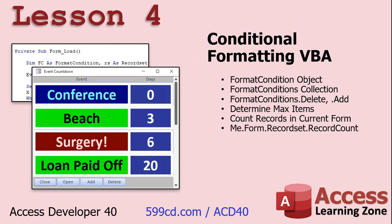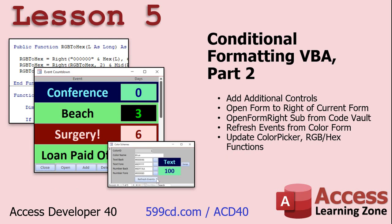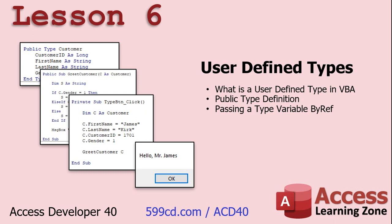Then in lesson four, we'll learn how to modify the conditional formatting on each form at runtime. When the form loads up, it's going to actually read in the color scheme from the table and set the conditional formatting when the form opens. We'll apply those different color schemes right to the form using some VBA. We'll also spend some time learning about user-defined types — that's kind of new, I haven't covered that in my VBA classes yet.